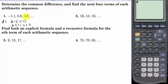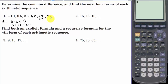Now we just have to add 1.7 to each term. That's going to be 4.0, 5.7, 7.4, and another 1.7 gives us 9.1.